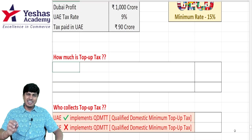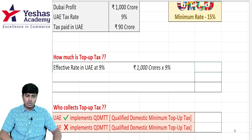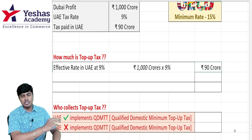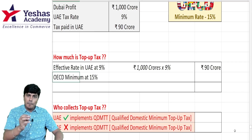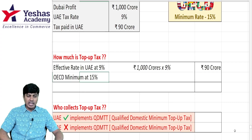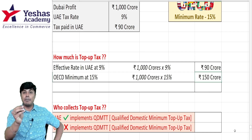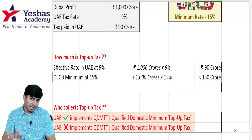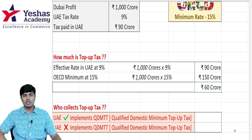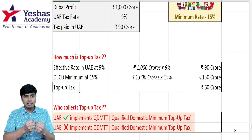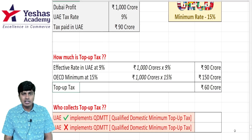What and how much is top-up tax? In Dubai, the effective rate is 9%. On 1000 crores, the UAE subsidiary has paid to the UAE government 90 crores. The actual rate they should have paid as per OECD limits is minimum 15%. Applying 15% on 1000 crores comes to 150 crores. So 150 crores is the minimum that should have been charged, but UAE government charged only 90 crores. The difference of 60 crores — that is the top-up tax.